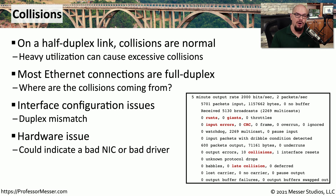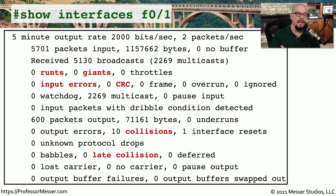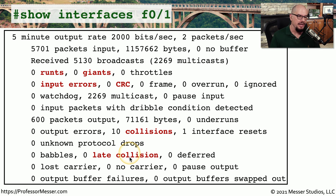There could also be a hardware problem causing the collision counter to increase. You'll want to look at the network interface card or the drivers for that device and make sure there's no issue with either of those components. If you look at a Cisco switch and run 'show interfaces' for a particular interface, you can see the number of runts, giants, input errors, CRCs, collisions, or late collisions, which might give you some insight into how well that interface is performing.